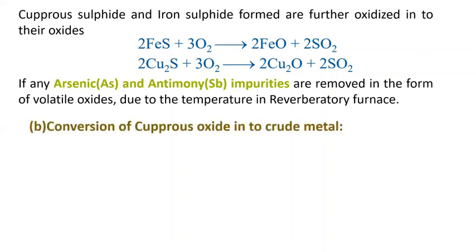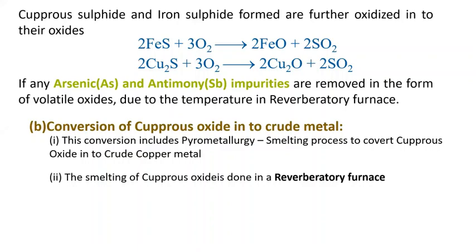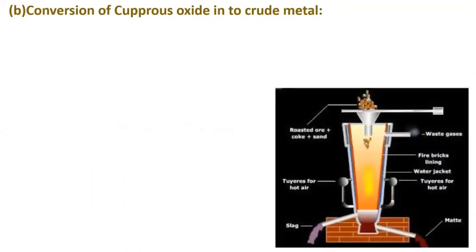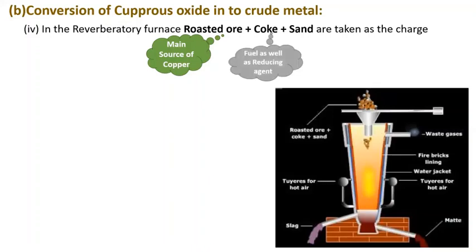For conversion of cuprous oxide into crude metal, we use pyrometallurgy — the smelting process — carried out in a reverberatory furnace. The main impurity in the roasted ore is ferrous oxide and traces of ferrous sulfide. Roasted ore, coke, and sand are mixed as the charge. Coke serves as both fuel and reducing agent, and silica (sand) is the flux.